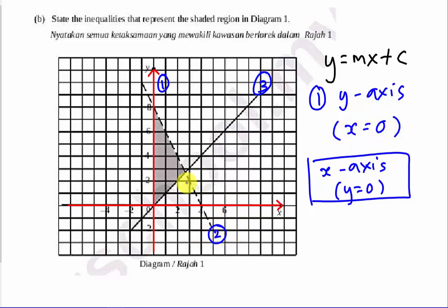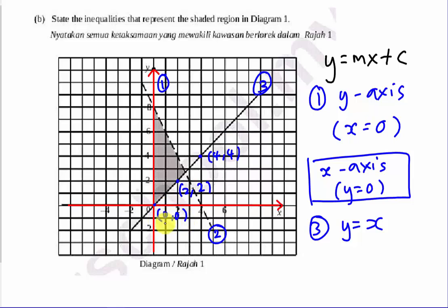Before going to the second equation, I'll jump to the third equation first. The third equation is very easy — it is y equals to x. When x equals 2, y equals 2; when x equals 4, y equals 4. On this straight line, the coordinates pass through (0,0), (2,2), (3,3), (4,4), so the x value and y value are always the same, meaning the equation is y equals to x.